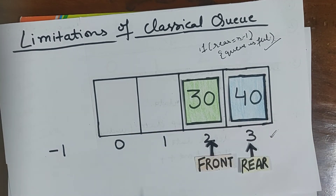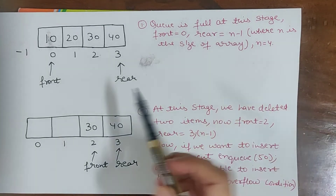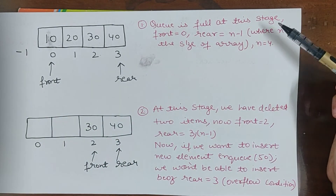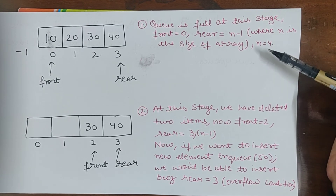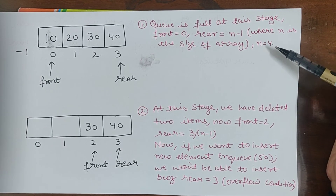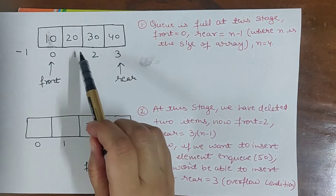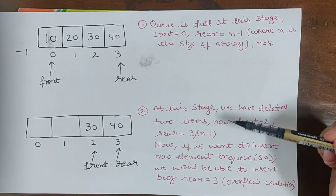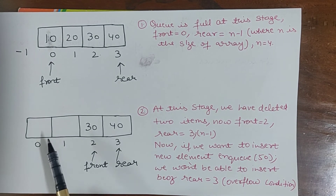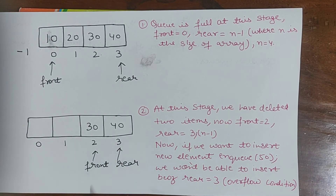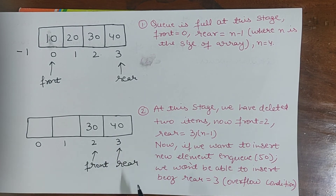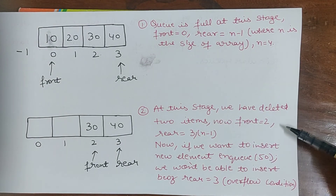Because this condition is again true — rear is pointing to 3, so queue is full. Space is there but we won't be able to insert. This is the limitation of classical queue. Queue is full at this stage: front is 0, rear is n minus 1 where n is 4. After deleting two elements there is space for two elements, but rear is still pointing to 3 which is n minus 1, so condition is true and queue is full.